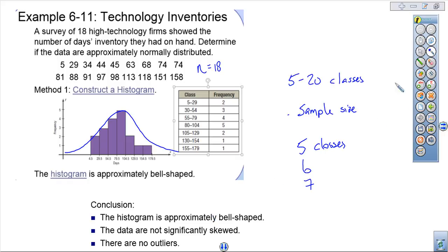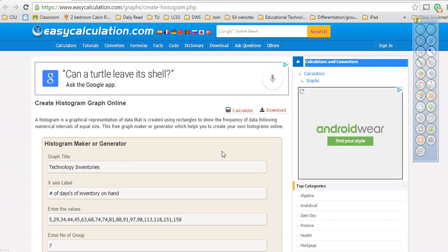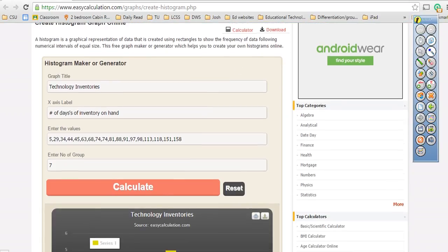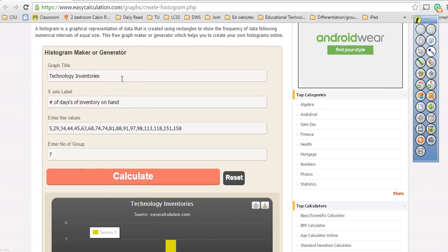Alright, so what I wanted to show you was what's it look like and how do we put it in. So let's jump to our easycalculation.com. Like I said, I'll provide you this link. We're not making anything you're going to turn in. So you come here. It asks you for a graph title. Just put in a title. It doesn't matter.